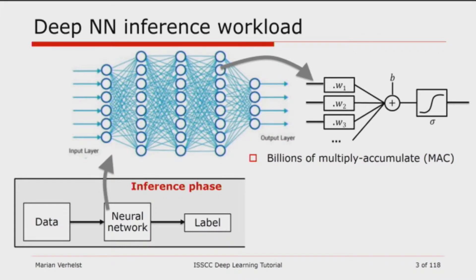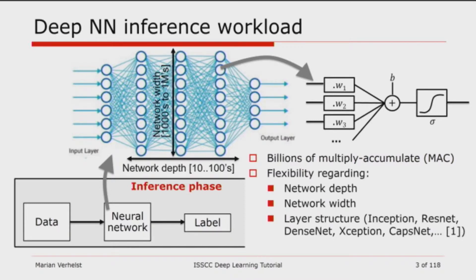Now let's take a look at what's basically happening in this inference phase. The neural network consists of many stacked layers of neurons. Every neuron is basically a big weighted sum, and hence involves many multiply-accumulate operations. A neural network as such has billions of multiply-accumulate operations. Algorithmic designers are still playing with the dimensions of this neural network — the depth, the width, the structure of the layers, and how the layers are interconnected. If we make hardware for this, we have to make very programmable and versatile hardware that can map networks of today and networks of the future.